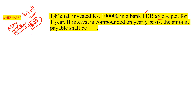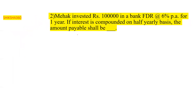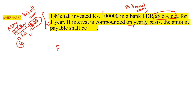In the retail exam they asked four questions on this topic on 12th February — all previous exam questions. Mahek invested rupees one lakh in a bank FDR at six percent per annum for one year. The interest is compounded on: first, a yearly basis; second, a half-yearly basis; third, a quarterly basis. In one set the principal was one lakh and in another set it was three lakh, but the approach has no changes. We have to calculate the amount using the basic future value formula.